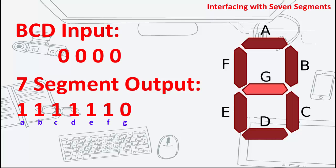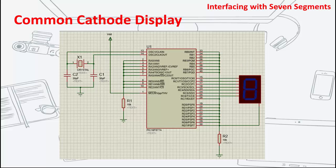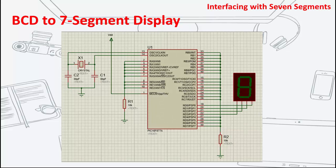Now that we have covered the basics of the 7-segment display, let's go ahead and interface it with a PIC16F877A. The first segment we will connect is a common anode display, which has a common pin that will be connected to VDD or a 5V supply. The rest of its pins will then be connected to the microcontroller. The second to connect is the common cathode display — the common pin is connected to ground, while the rest of the pins are connected to port C of the microcontroller. And the last is the BCD to 7-segment display, which we will be connecting to port D.